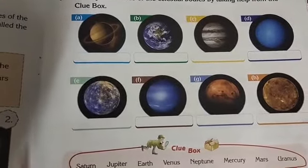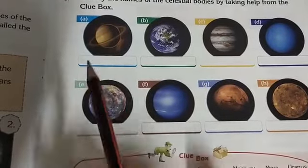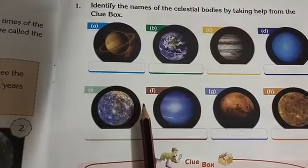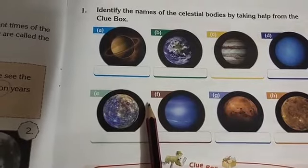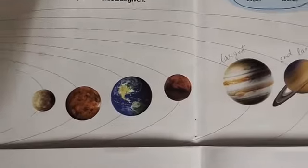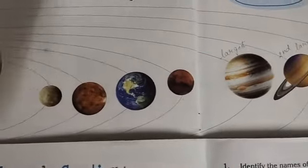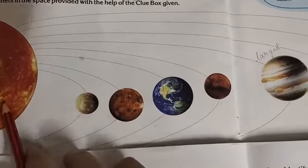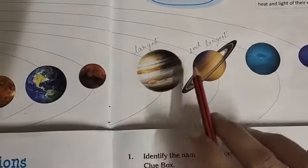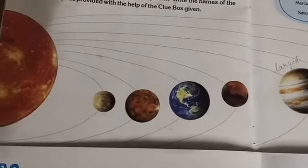Do you know which picture this is? Before you identify the picture, I would like to show you the picture of the solar system. This is the solar system — here you can see. This is the sun, and there are 1, 2, 3, 4, 5, 6, 7, 8 planets with the sun.